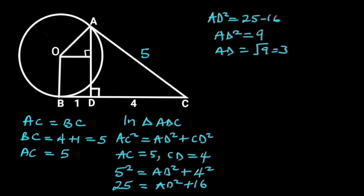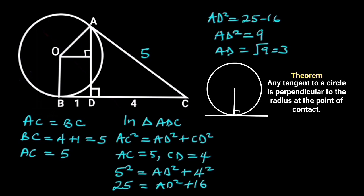Let's recall the circle theorem of tangent and radius. It states that any tangent to a circle is perpendicular to the radius at the point of contact. From this theorem, it follows that OB is perpendicular to BC.